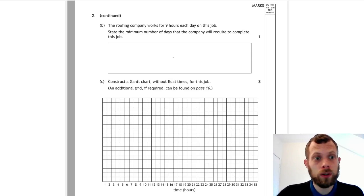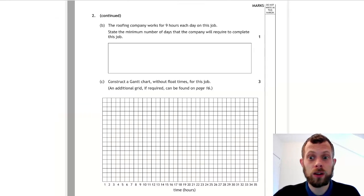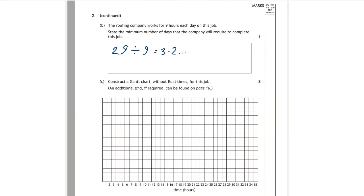Now we're on to part B. The roofing company works for nine hours a day on the job. How many days do they need? Let's look at how long the project would take. It would take 29 hours, so we need to do 29 divided by nine. This is three and a bit, but they want the number of days it takes, so we have to say four days.